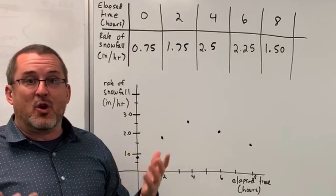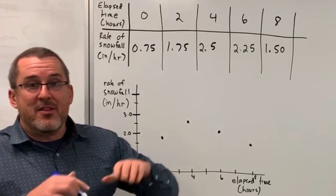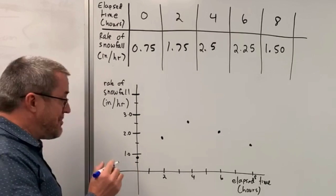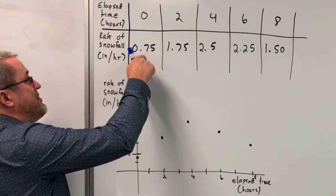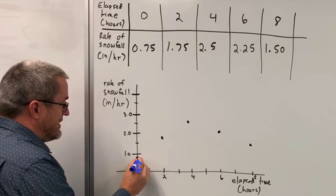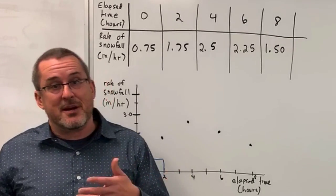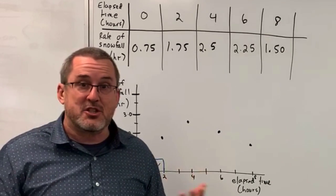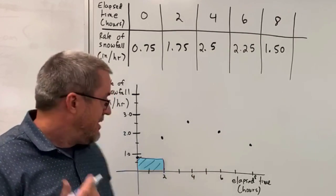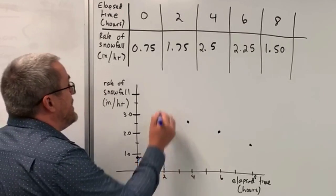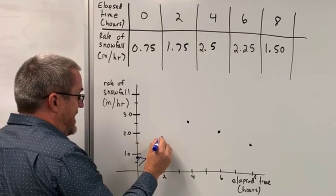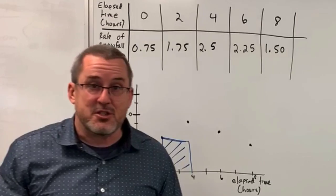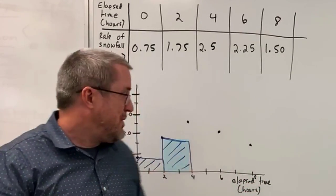What if we thought about the total amount of snowfall during this eight-hour storm by breaking it up into two-hour chunks, rather than using a constant 1.75 for the entire eight hours? Let's imagine that for the first two hours, the snowfall remained at 0.75 inches per hour for the entire two hours — giving us a rectangle whose area tells us how much snowfall happened during that first interval. Then for the next two hours, let's imagine the snowfall remained at 1.75 inches per hour, and the area of that rectangle gives an estimation for the snowfall during that period.